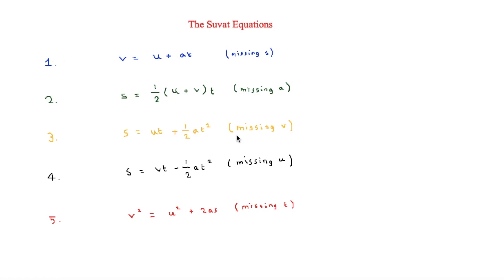This is Simon Stark and in this video we are looking at the SUVAT equations. There are five equations that we need to learn and each of them will miss something. The first one is V equals U plus AT, where V is final velocity, U is initial velocity, A is acceleration, T is time, and this one is missing S — displacement.